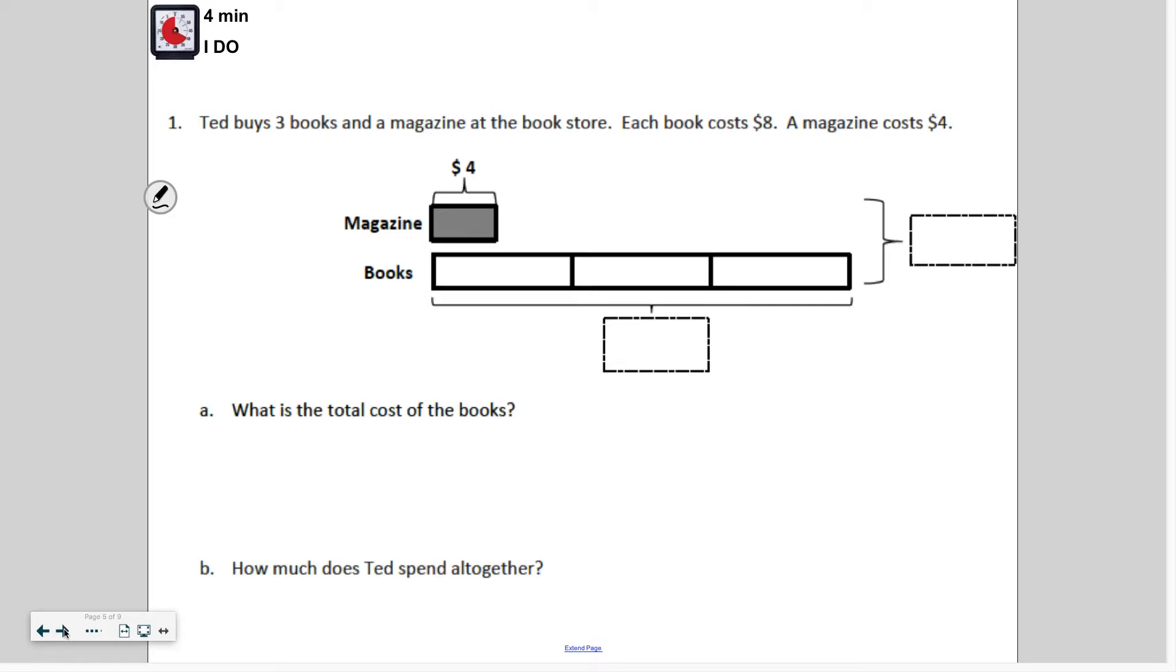I have my word problem here. I'm going to model one and then you'll do one on your own. Ted buys three books and a magazine at the bookstore, so that's four items. Each book costs $8, and a magazine costs $4. This tape diagram has already been partially filled in. It shows the magazine at $4 and three books. I want to find the total cost of the books and then the total cost of the magazine and books combined.